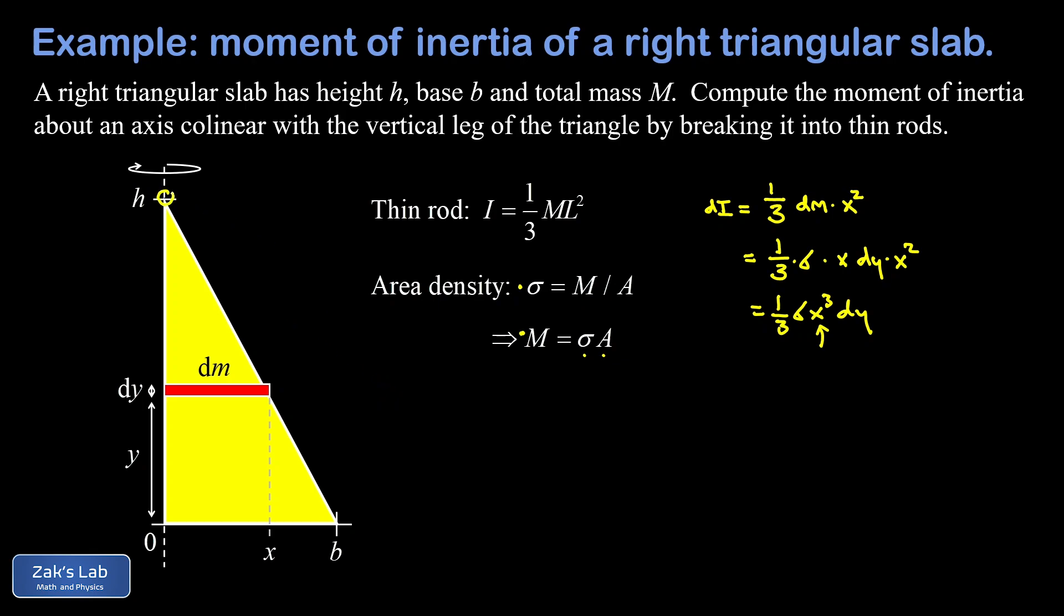One at the top of the triangle at (0, h) and the other at the bottom at (b, 0). If we can get an equation for that line connecting those two points, well that gives us the relationship between x and y.